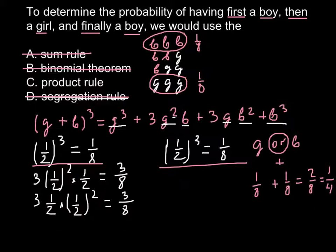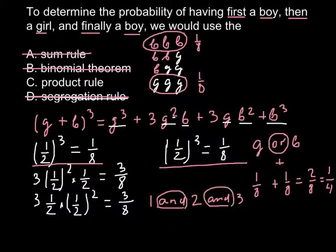We can now cross out the sum rule answer. We are only left with the product rule. The product rule applies when the question asks what is the probability that the first child is of a specific gender AND the second AND the third. If we can connect events with 'and,' we use the product rule.